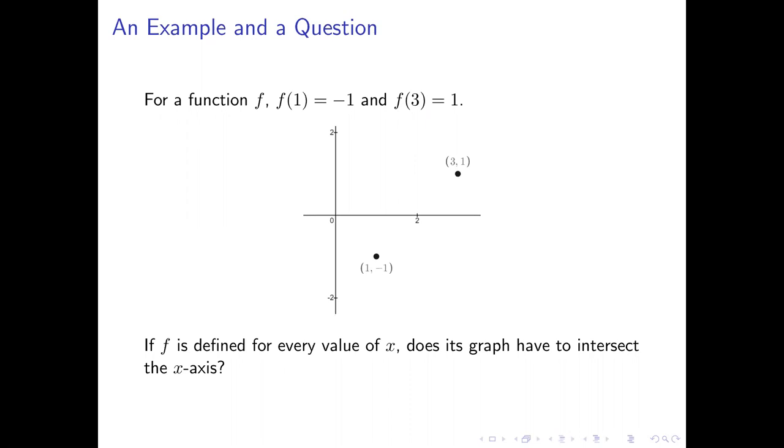So we know that the two points you see in the graph here are on the graph of our function f, but this is not a complete graph of the function, because we're going to stipulate that f is defined for every value of x. And now the question is, does the graph of f have to intersect the x-axis?